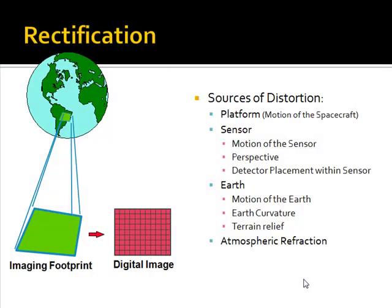Rectification basically involves removing distortion from an image so that we can use it as a map within our GIS. There are a few sources of distortion: the platform, meaning the motion of the spacecraft or aircraft; the sensor, including its motion, perspective, and detector placement; the Earth itself, which is moving, has curvature and terrain; and of course atmospheric refraction.